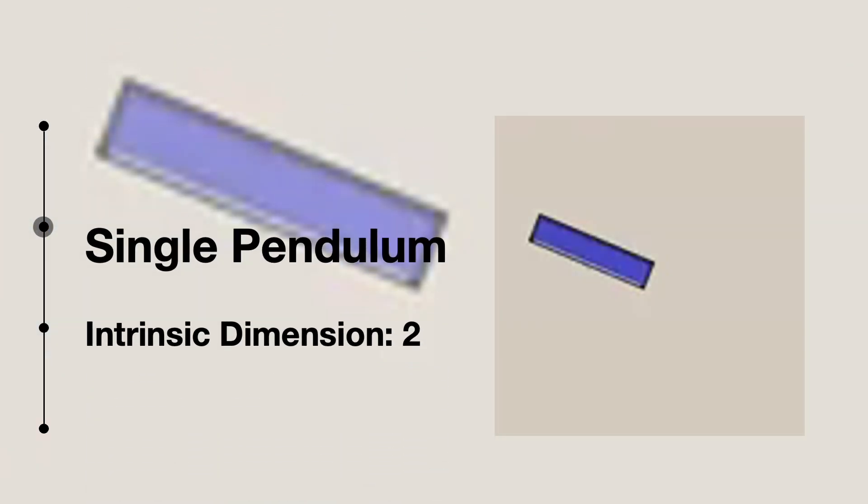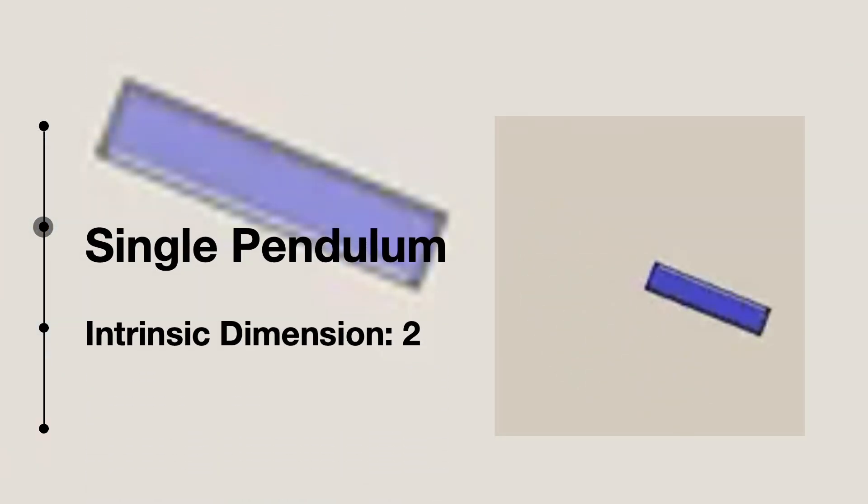The single pendulum system also has an intrinsic dimension of 2 but is a non-linear oscillator with varying frequencies. It has two equilibrium states, one stable and one unstable.